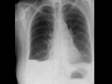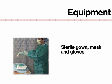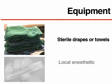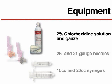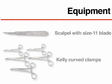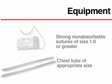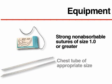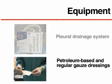A chest x-ray should be performed when possible prior to chest tube insertion. Key materials required include a sterile gown, mask, and gloves; sterile drapes; local anesthetics such as 1% lidocaine; chlorhexidine cleaning solution and sterile gauze; 25 and 21 gauge needles; 10 cc and 20 cc syringes; a scalpel with size 11 blade; at least 4 or 5 Kelly curved clamps or artery forceps; non-absorbable sutures of size 1.0 or greater made of silk or nylon; a chest tube of appropriate size; a sterile drainage system; and dressings.